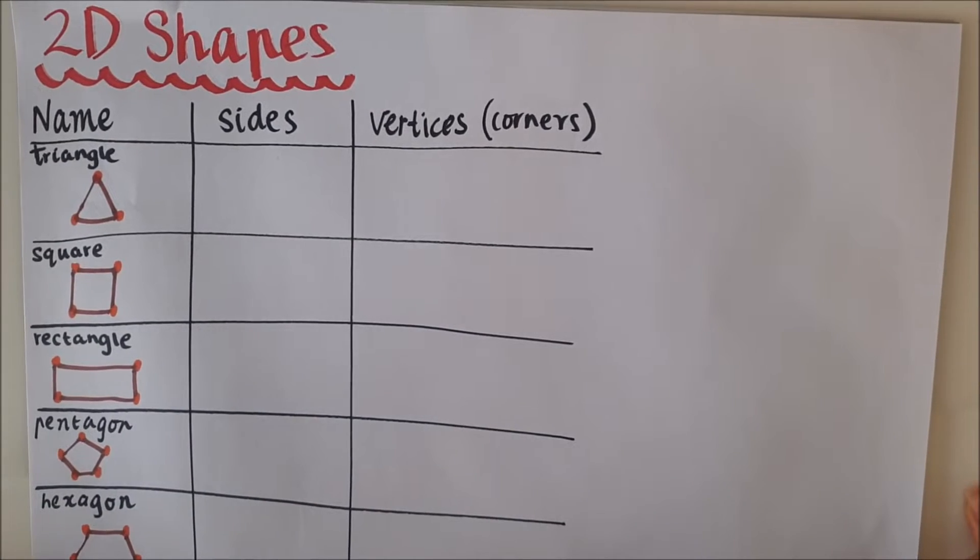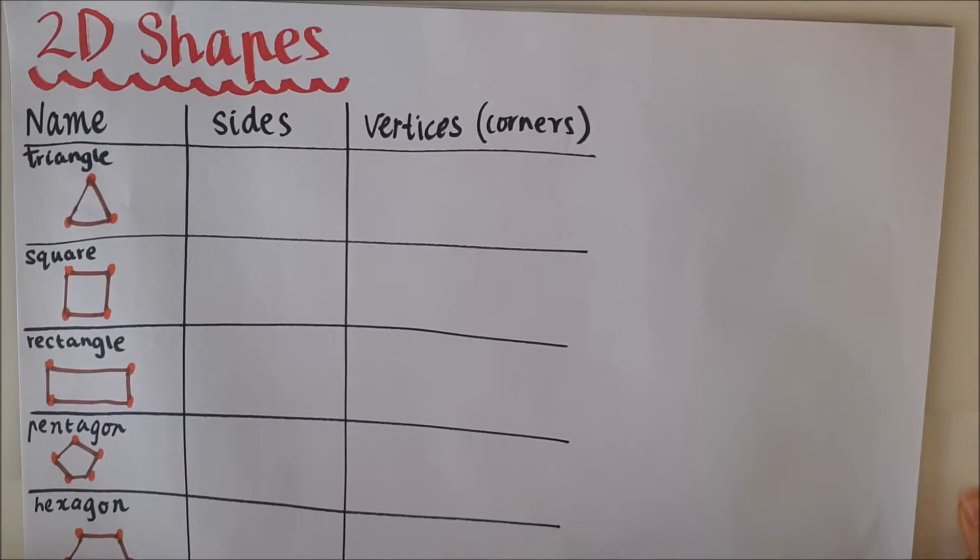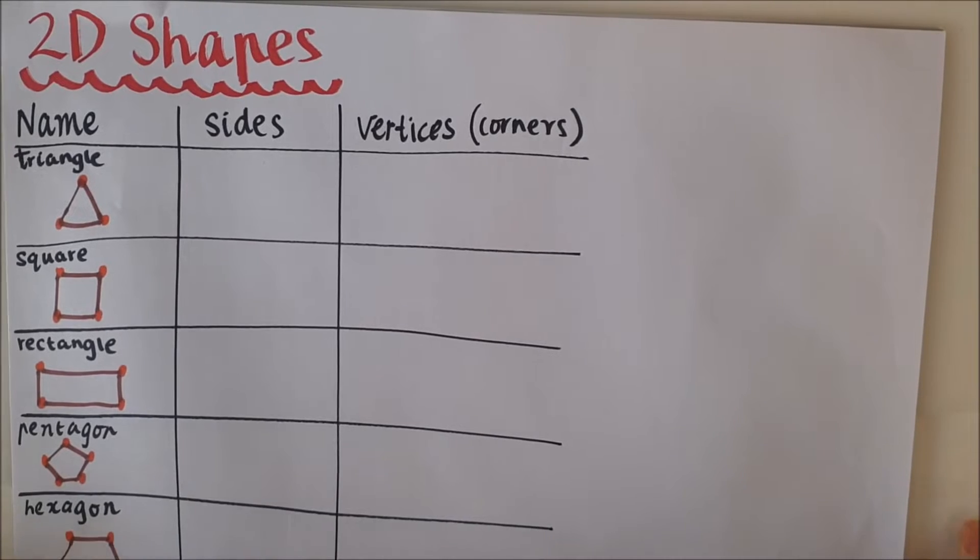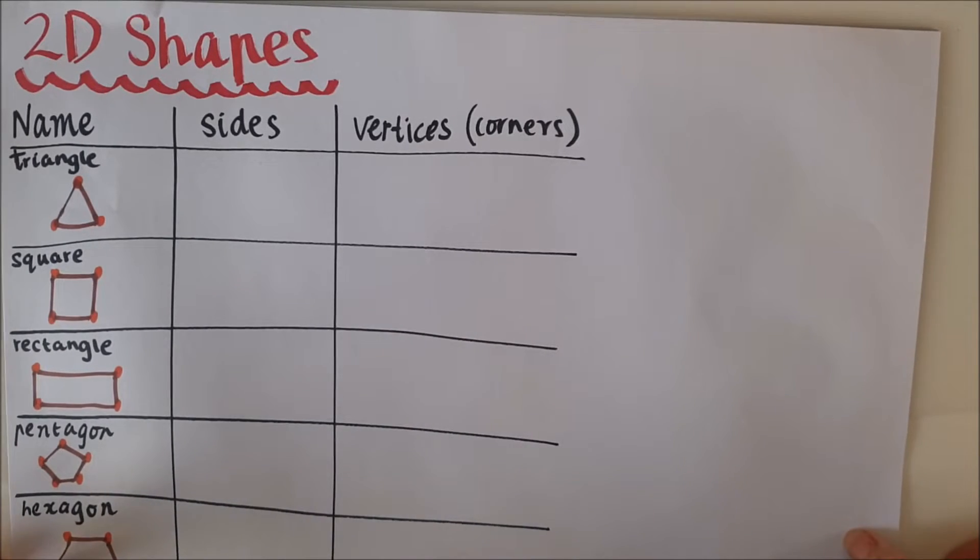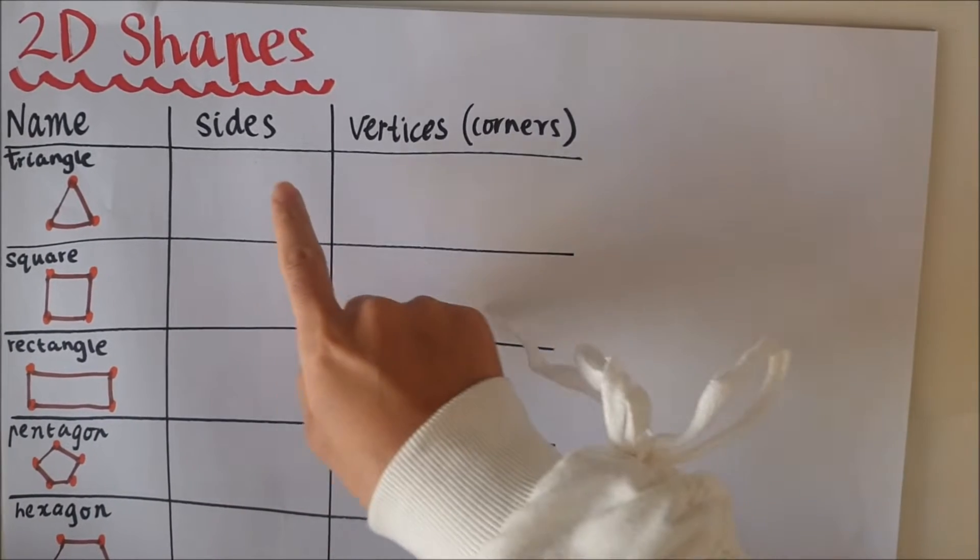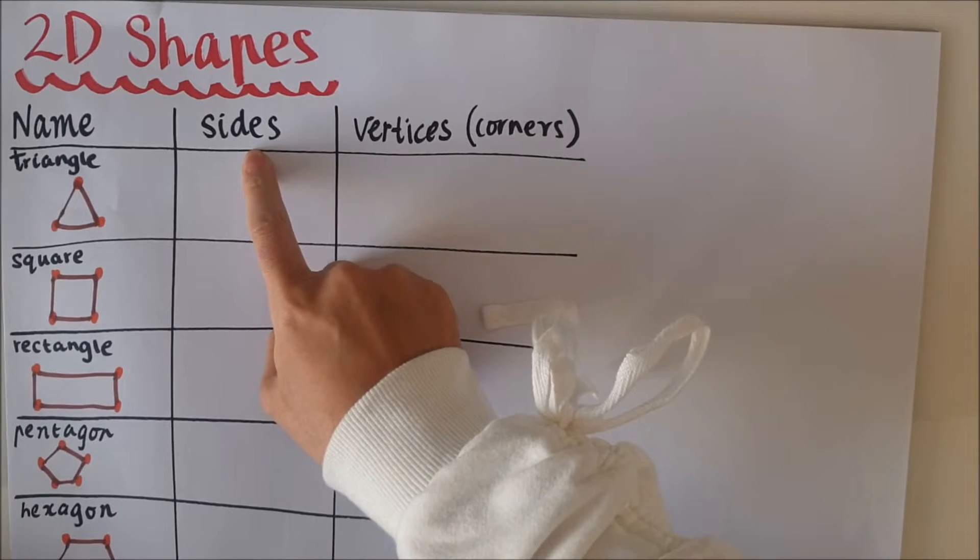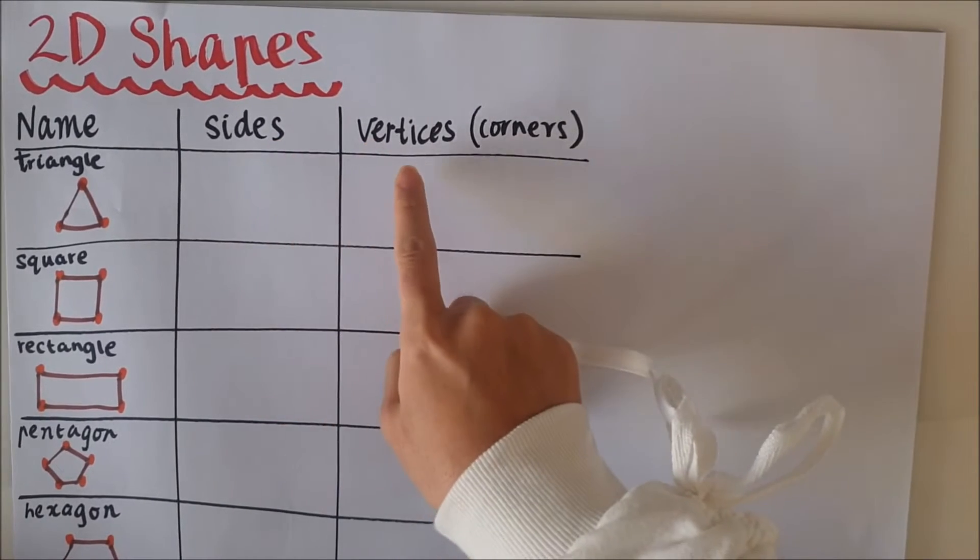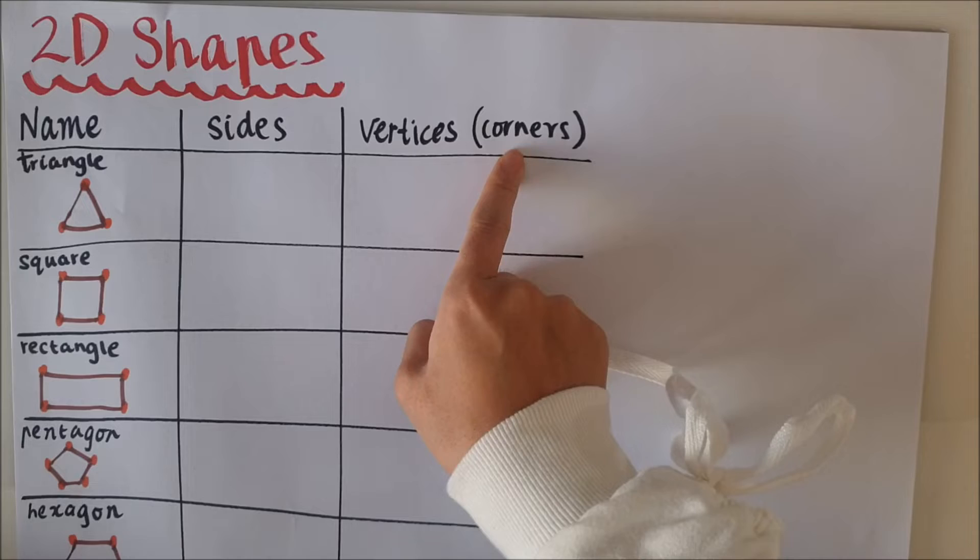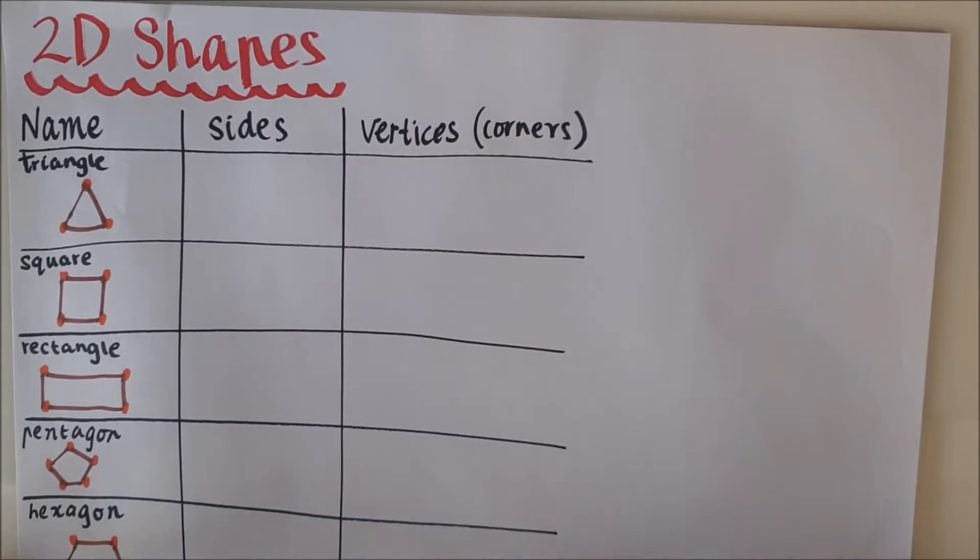Hello boys and girls. Today we are going to look at the features of 2D shapes and how we would usually describe shapes is by telling us how many sides it has and how many vertices or sometimes it's known as corners.